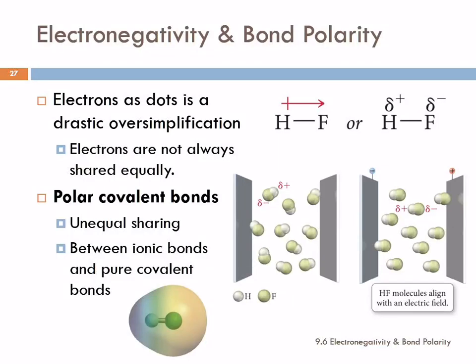Lewis theory is a simplification. Writing electrons as dots is actually a drastic oversimplification of what's going on. We talked earlier about the wave functions and all of that, and the dots make things look really simple in comparison.